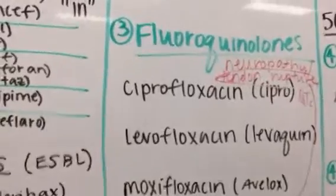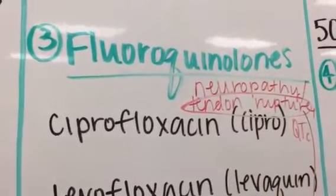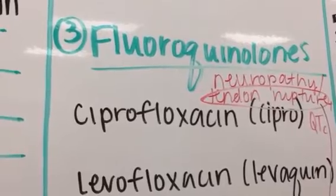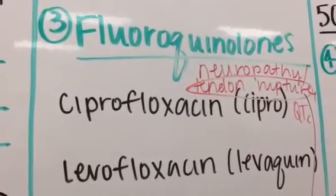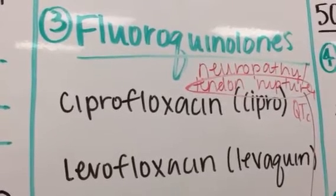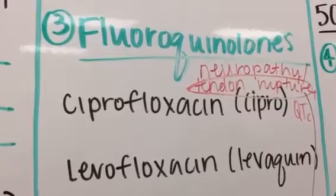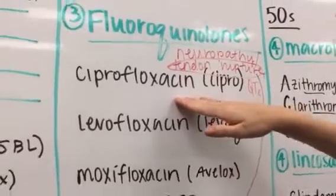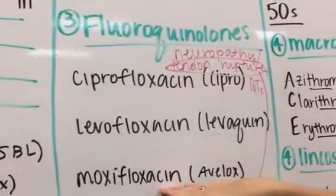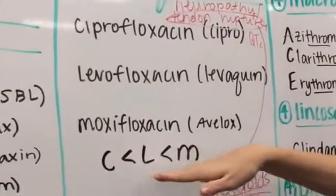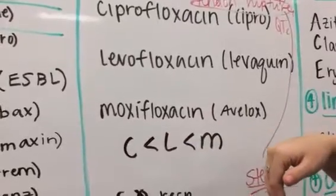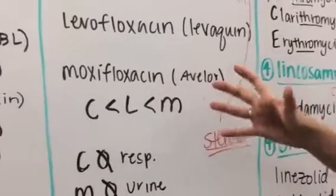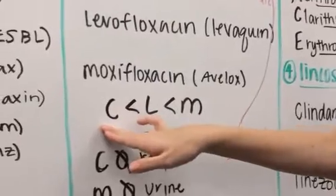Next we move into nucleic acid synthesis, specifically the fluoroquinolones. These work on topoisomerase, an enzyme that breaks down DNA during unwinding — inhibiting it causes DNA breaks. The three fluoroquinolones are ciprofloxacin, levofloxacin, and moxifloxacin. I've listed them in alphabetical order, which also happens to correspond to their side effect severity profile — moxifloxacin has the most severe side effects and ciprofloxacin has the least.